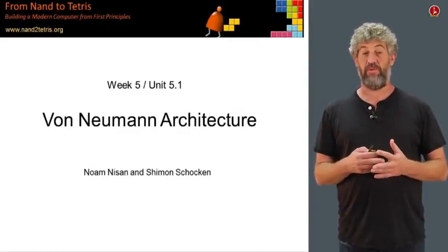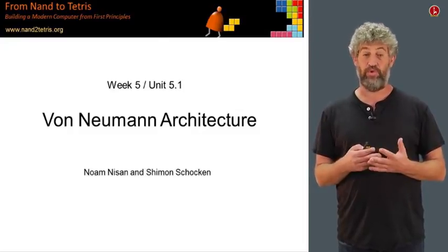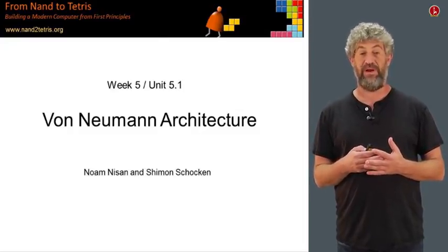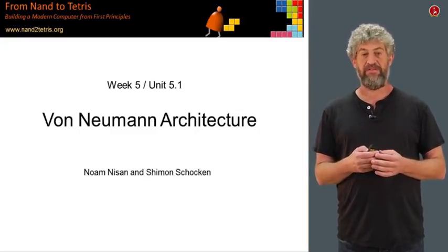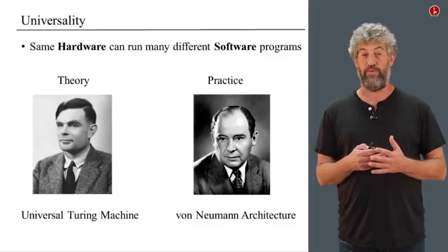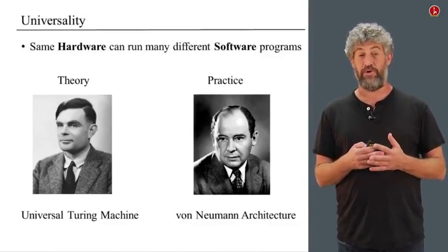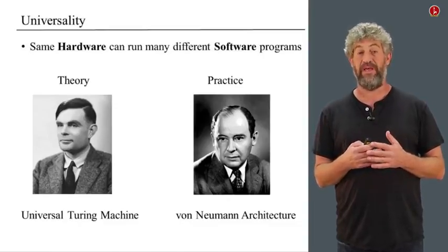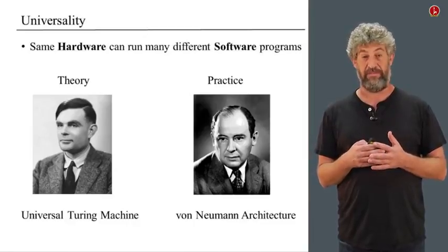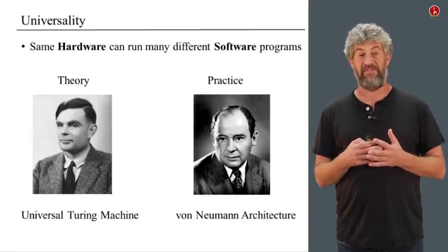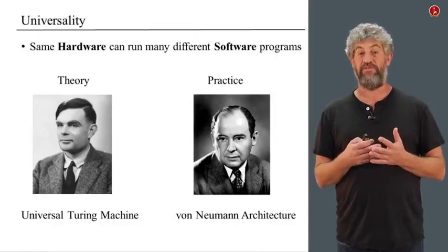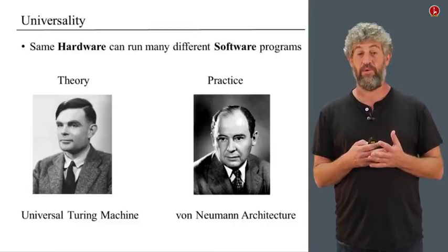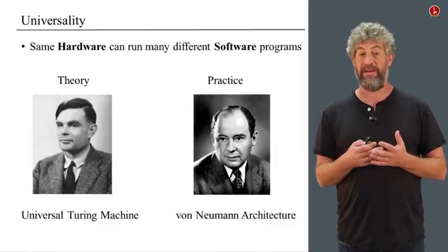Last week, we described what the computer that we're building in this course is supposed to do. This week, we get to the more difficult task of actually doing it, implementing a computer that can actually do everything that we promised previously. The most amazing thing was that one computer is able to run any kind of program, any kind of software — it's supposed to get instructions from the software and execute them. That idea was called the universal Turing machine in the theoretical world, and the architecture that actually implements it is called the Von Neumann architecture, and this is what we're going to build today.